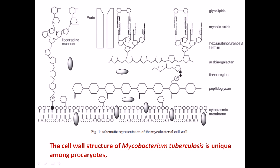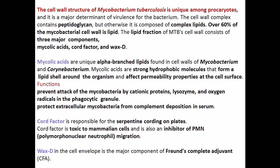But in the case of Mycobacterium tuberculosis, most of the cell wall component is made up with lipids, and very little is made up with peptidoglycan. Almost 60% is made up with lipids. The presence of lipid has very important significance in spreading the infection by Mycobacterium tuberculosis.